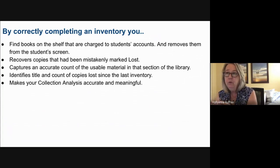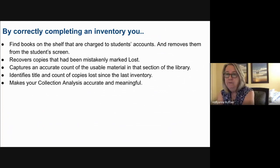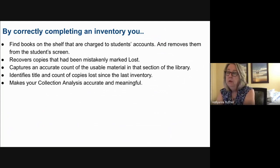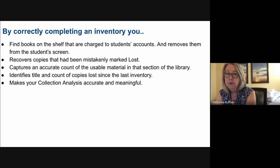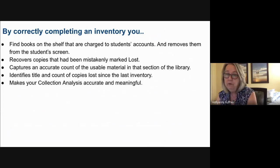By completing an inventory, you're actually finding lots of problems and correcting them. You're recovering copies you thought were lost that Destiny had marked lost, and it actually counts the usable material in your library. So you really know — yes, I have 12,000 fiction copies, not the 15,000 you originally thought. This also makes our collection analysis tools meaningful. If you've not done an inventory in years, stuff is lost, stuff is missing that you don't even know about. Destiny is only as good as your most recent correctly completed inventory, and it can say you have things that were lost ten years ago if you haven't been doing an inventory. So it makes your collection analysis accurate and useful — the reports are only as good as the data inside.